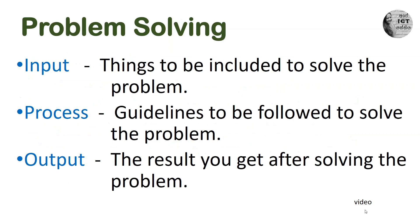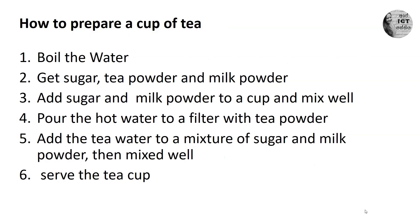Problem solving: input, process, output. Things needed to solve the problem are known as input. Process: the guidelines to be followed to solve the problem — how we are going to solve it. Output: the result you get after solving the problem. So for our tea example, the inputs are hot water, sugar, tea powder, and milk powder. The process is how you are going to prepare a cup of tea.